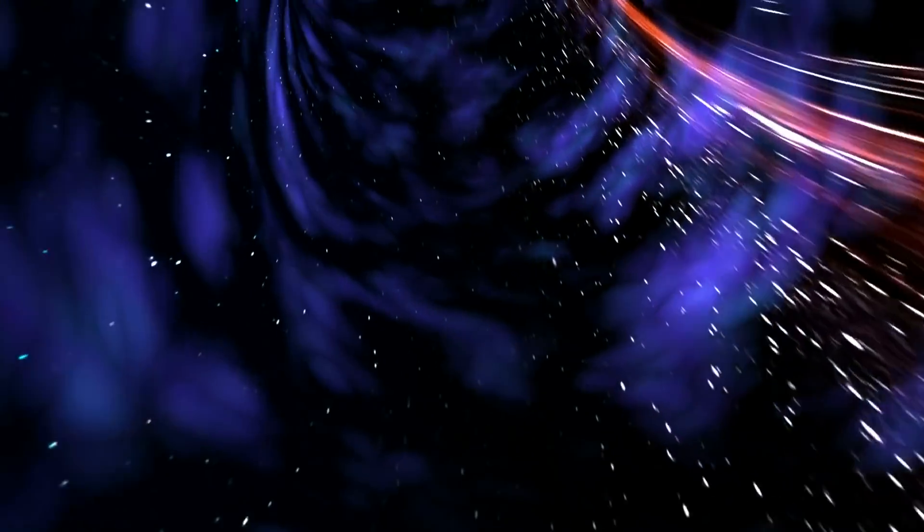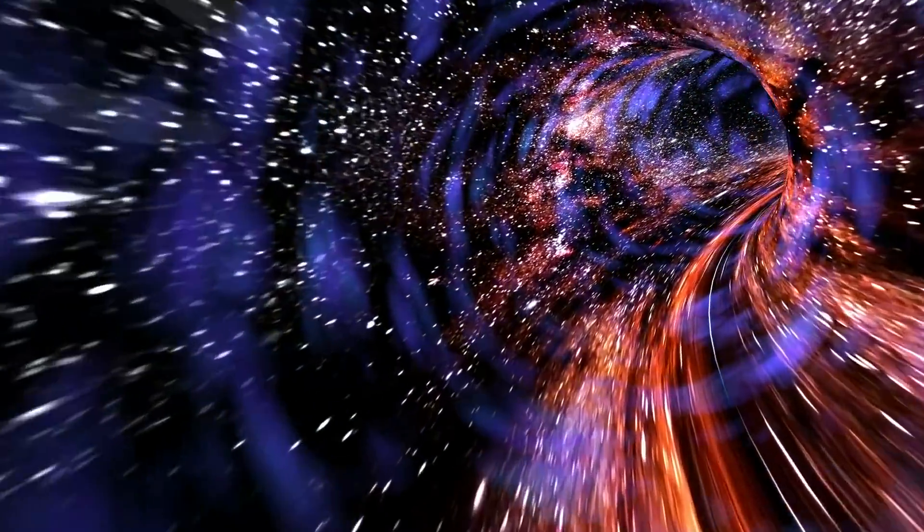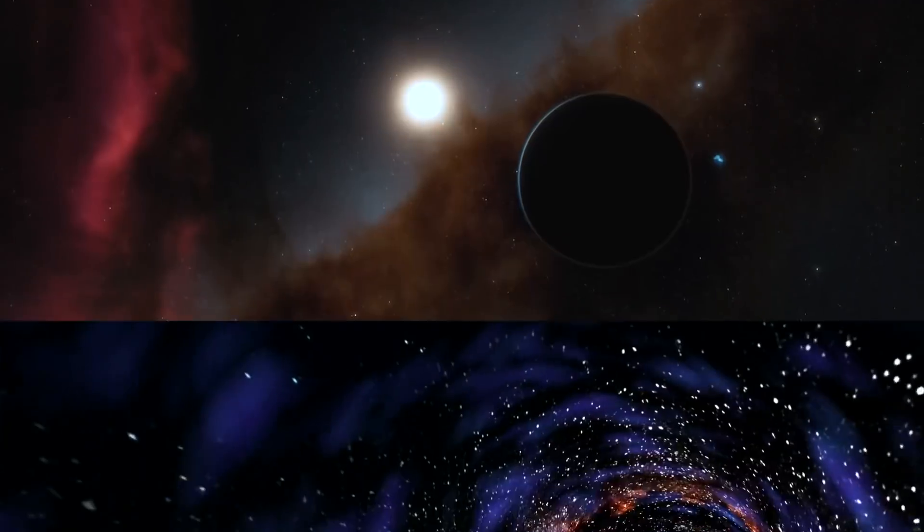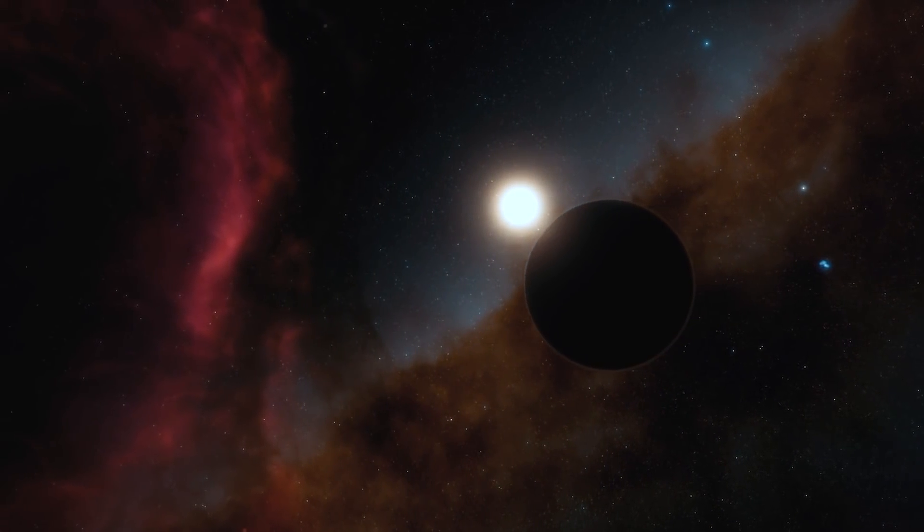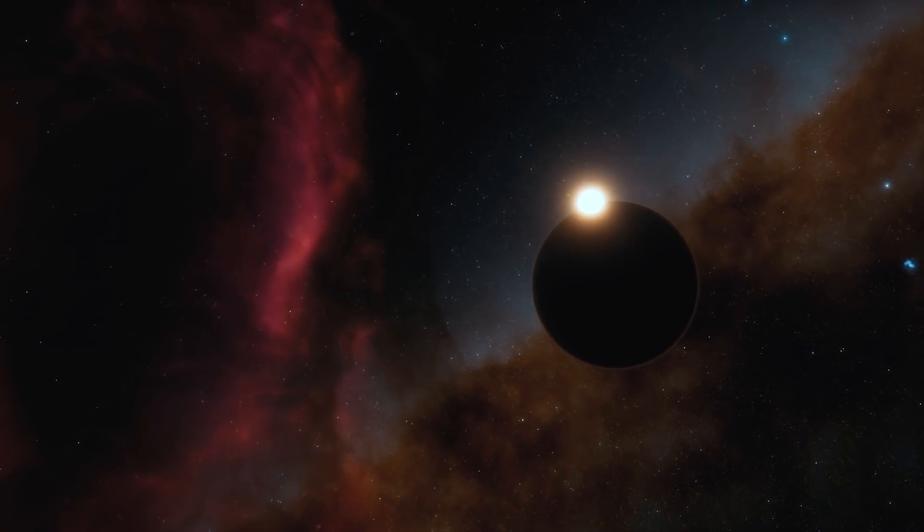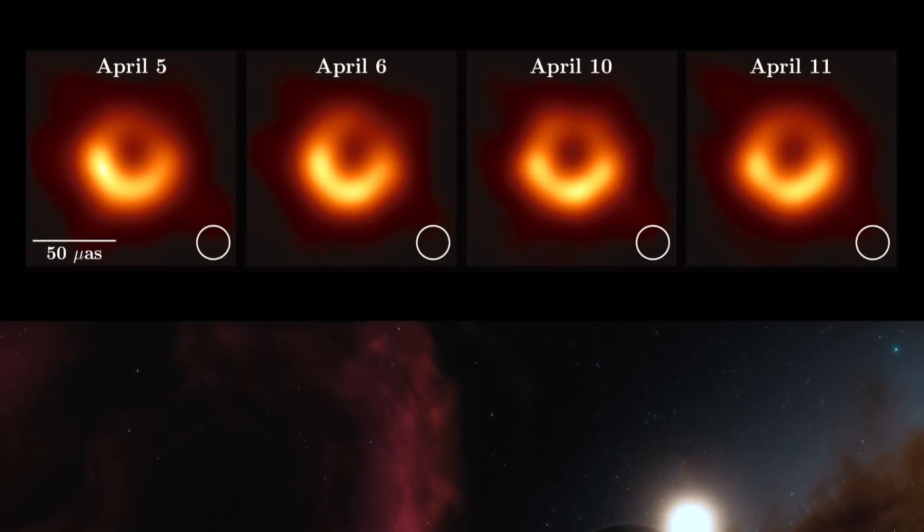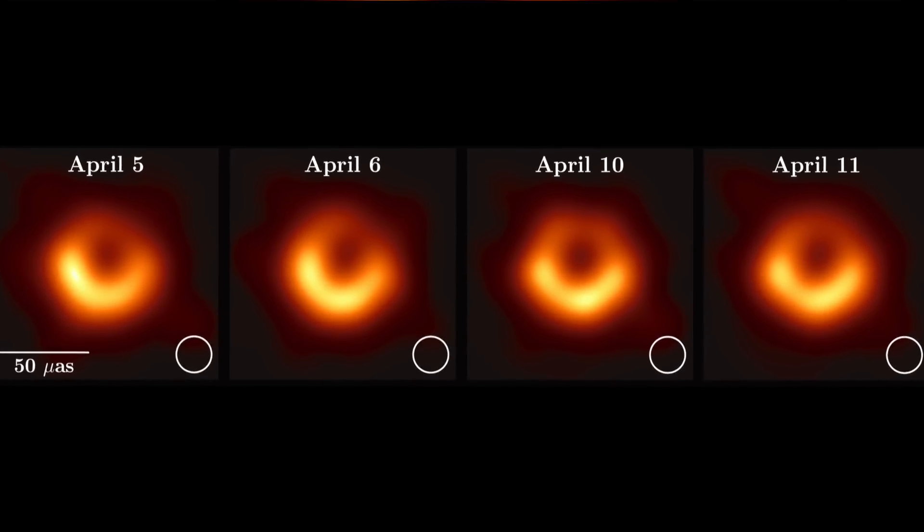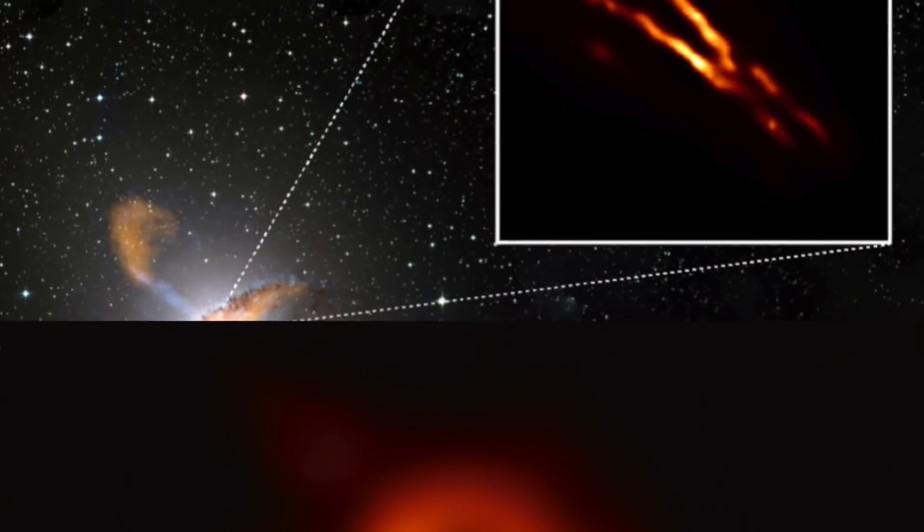NASA is learning more about black holes by sending satellites and telescopes into orbit. The spacecraft assists scientists in finding answers to puzzles about the cosmos. In 2019, the Event Horizon Telescope, or EHT, collaboration released the first image ever recorded of a black hole. The EHT discovered the black hole in the heart of the galaxy M87 while studying the event horizon, or the region beyond which nothing can escape from the black hole.